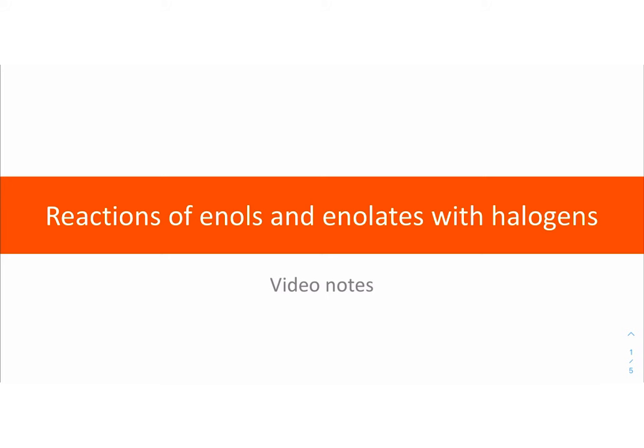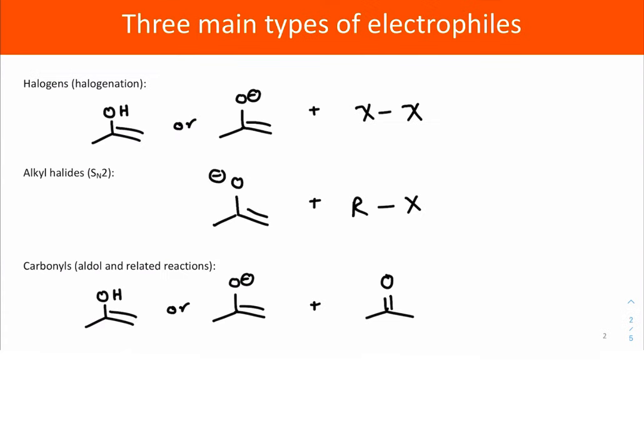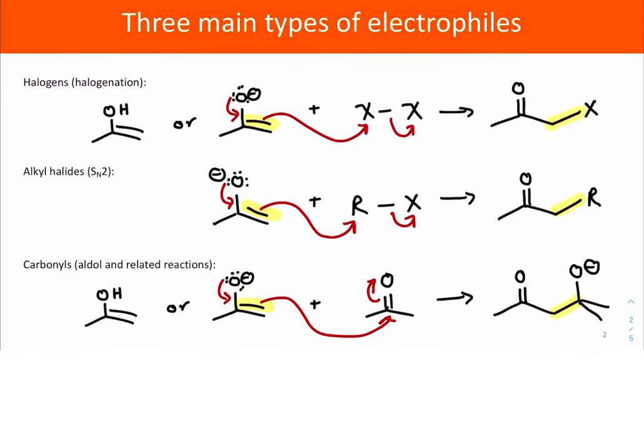Hey there, so in this video we're going to look specifically at the reactions of enols and enolates with halogens. Halogenation is one of the three main types of reactions that we're going to be looking at with enol or enolate nucleophiles in this particular course. In this video specifically we're going to be looking at the reactions of the enol or enolate with halogen electrophiles and special considerations for each of those particular cases.